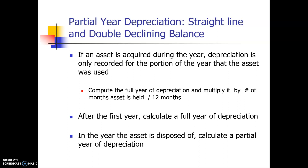This won't matter for units of production — it doesn't matter when you bought it because that method is based on usage, and obviously you can't use it when you don't own it. But for straight line and double declining balance, these are based on years, so if we buy an asset in the middle of the year, we can't take a whole year of depreciation.